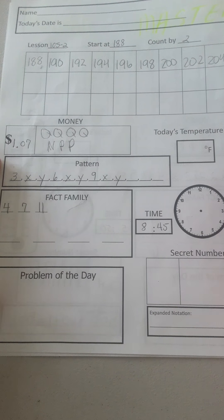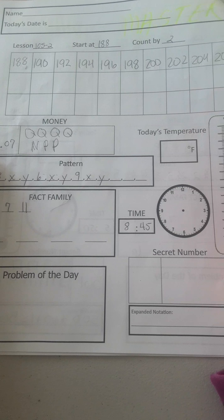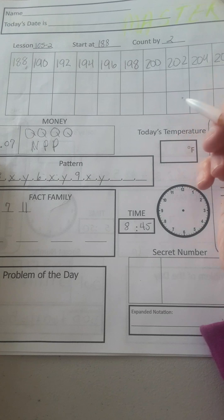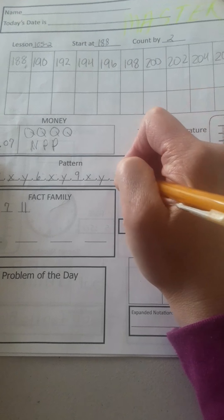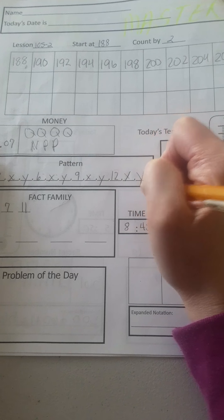Okay, let's take a look at our pattern. We have 3XY, 6XY, 9XY. And what do you think the last one would be? 12XY.